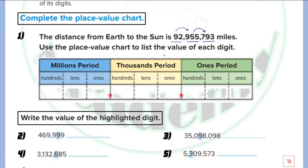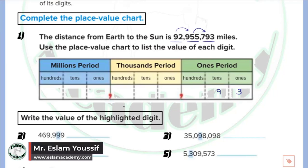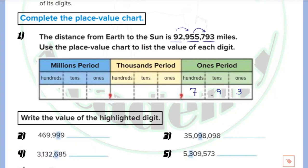Now we use the place value chart to list the value of each digit, starting from the right. 3 is at the ones place, so its value is 3. 9 is at the tens place, so its value is 9. 7 is at the hundreds place, so its value is 700. Moving to the thousands period: 5 at the ones place in the thousands period equals 1,000. The next 5 at the tens place equals 50,000. 9 at the hundreds place in the thousands period equals 900,000.